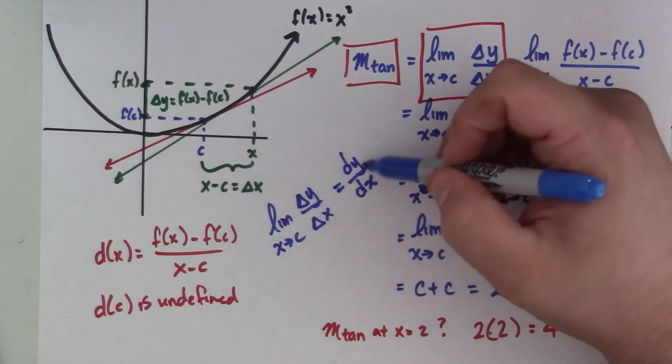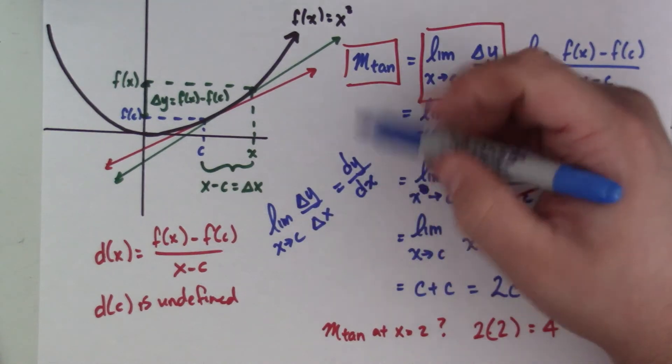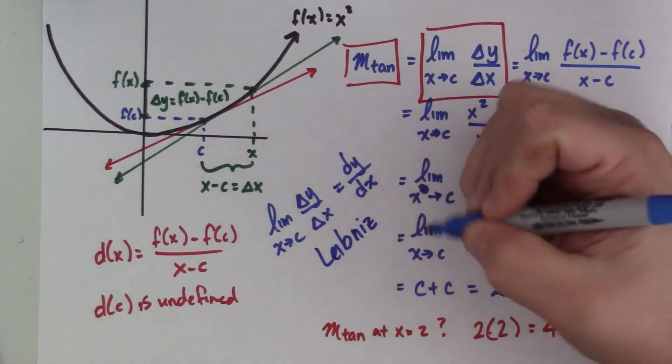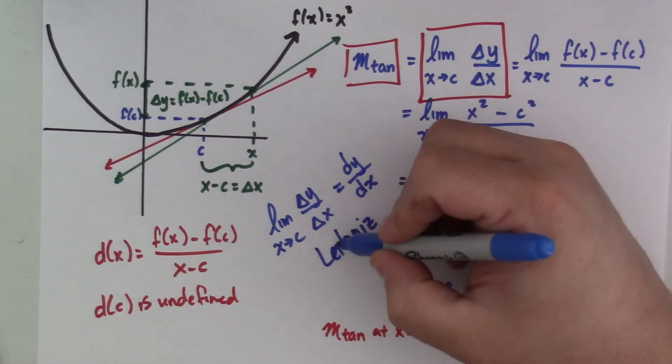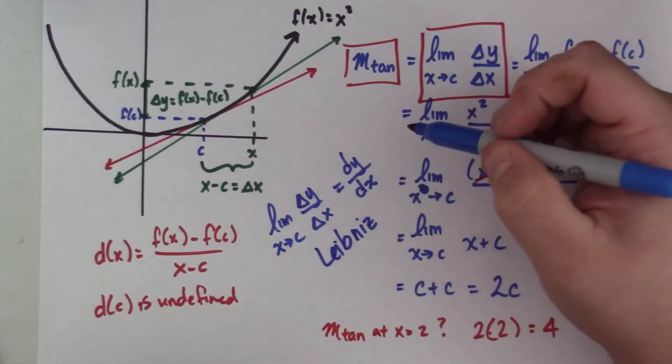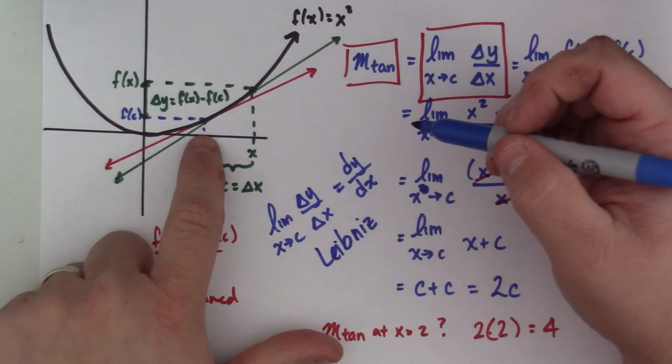And we talked about how delta is the Greek letter for d, and I'm just using a d. This is a notation introduced by Leibniz, one of the two men credited with inventing calculus.